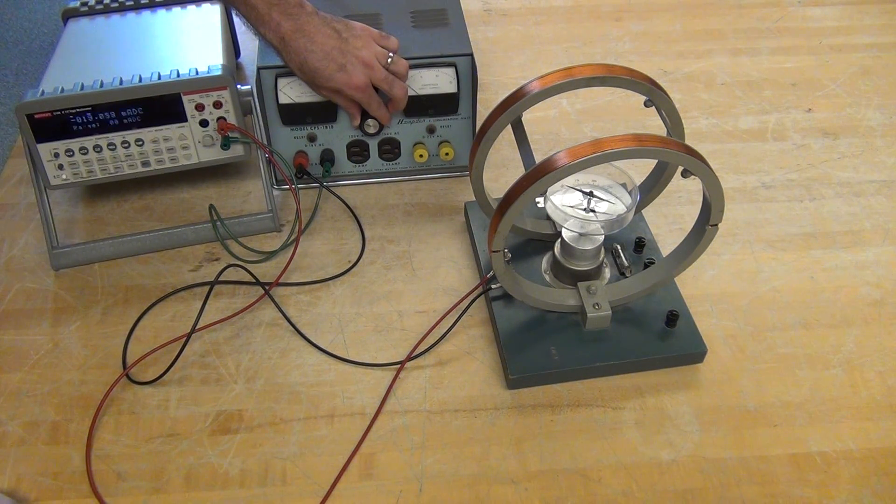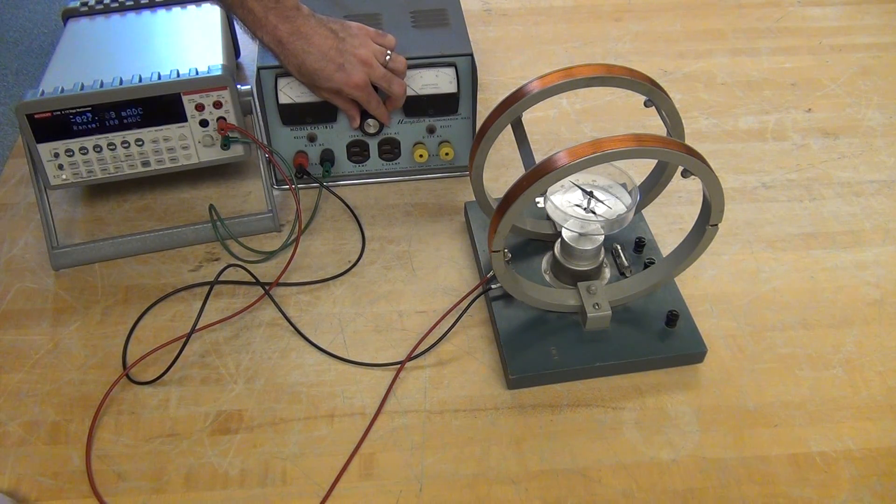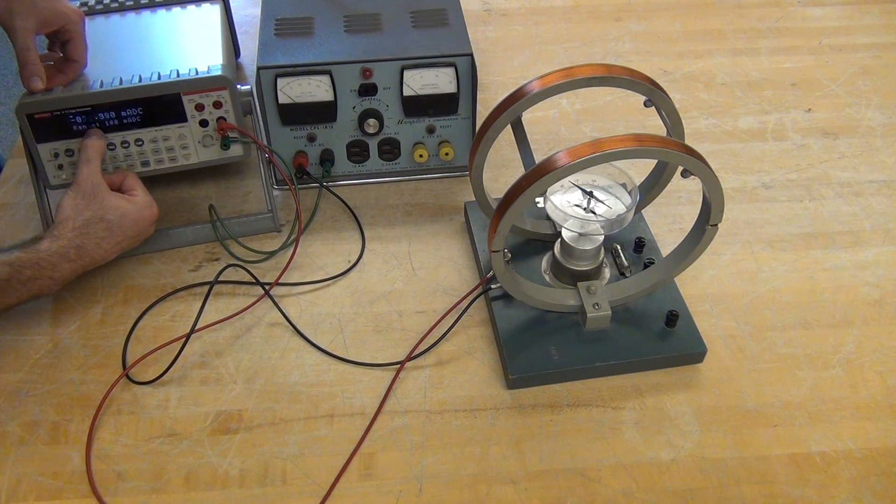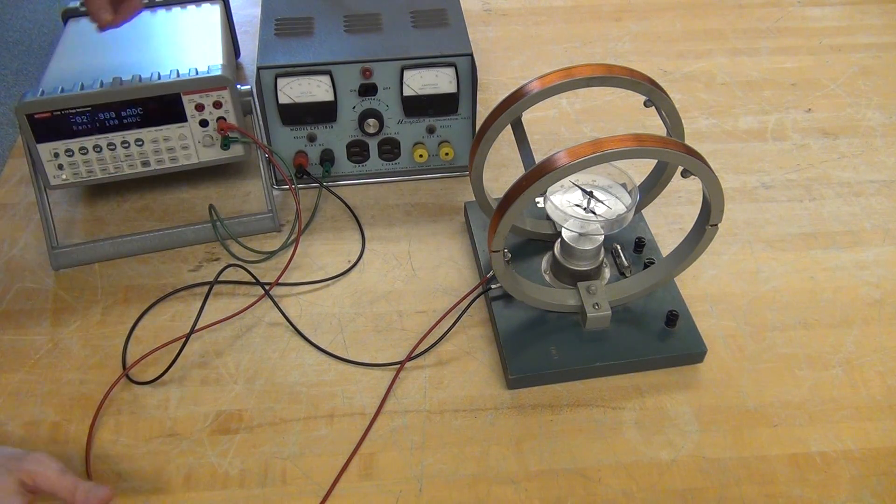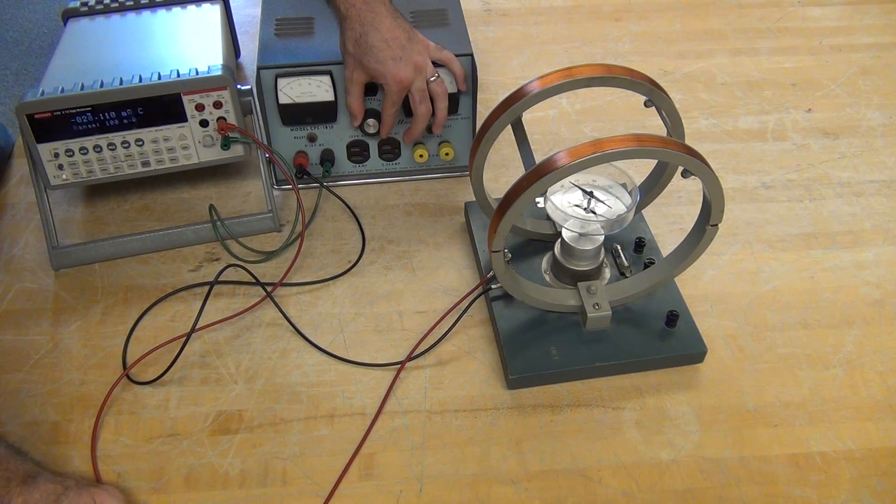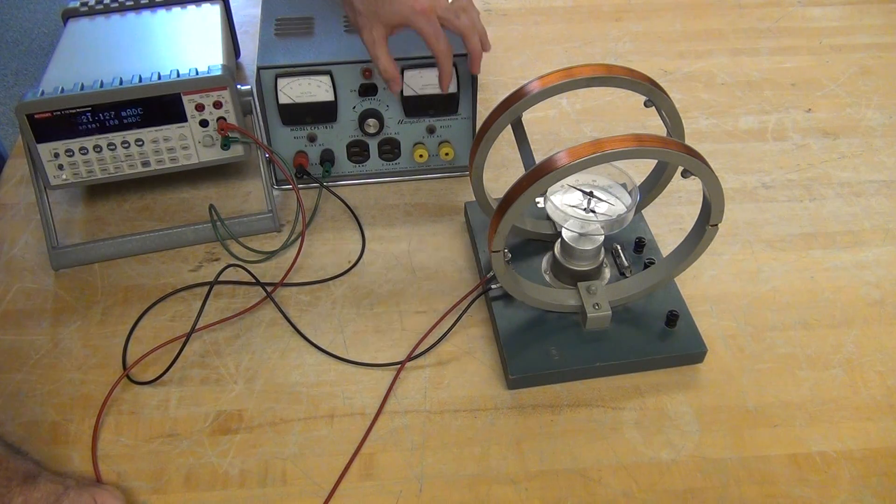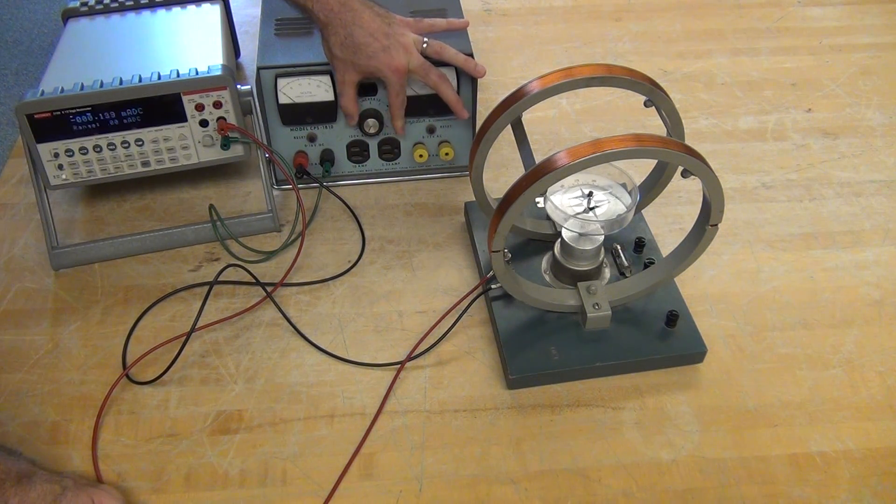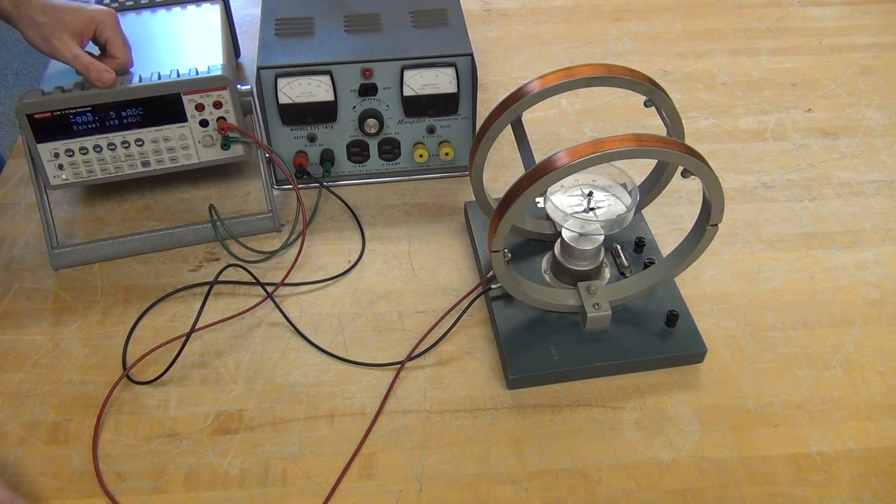I find what current I need for a 60 degree deflection. Measure it off, negative 28.99 milliamps. Then, what current do I need for a 50 degree deflection, 40 degree deflection, 30 degree deflection, etc. And then, zero it back out.